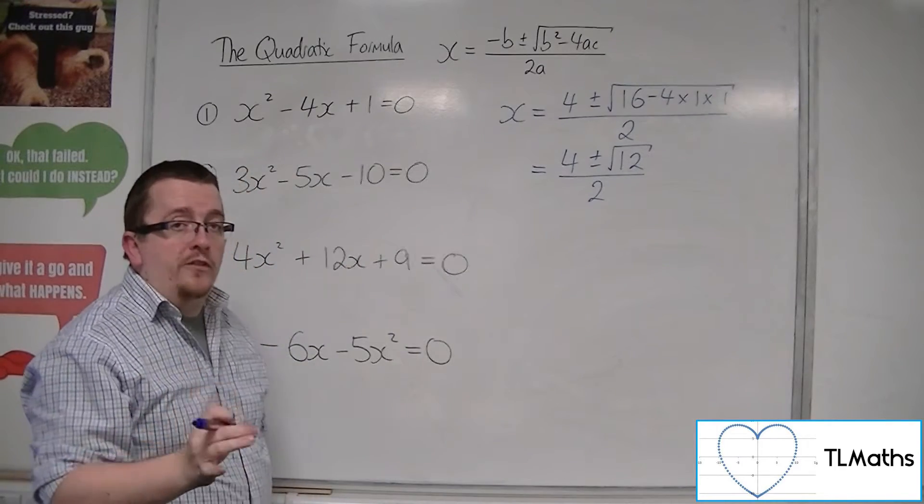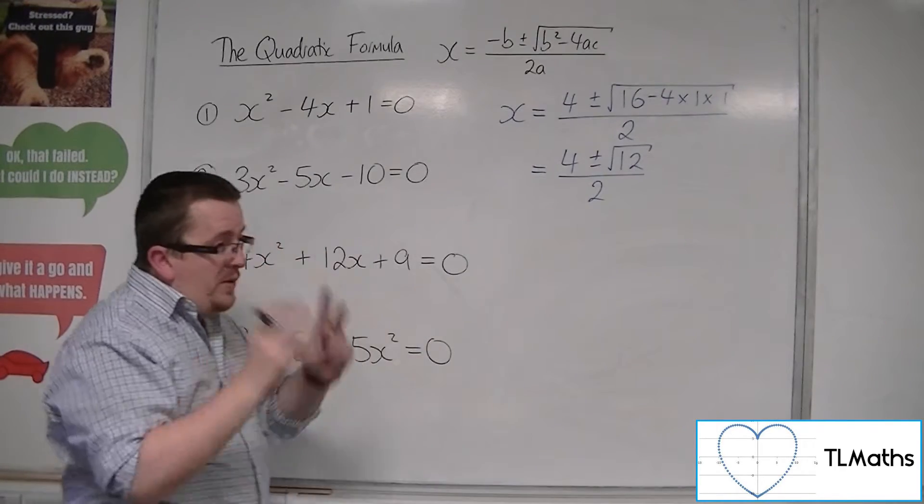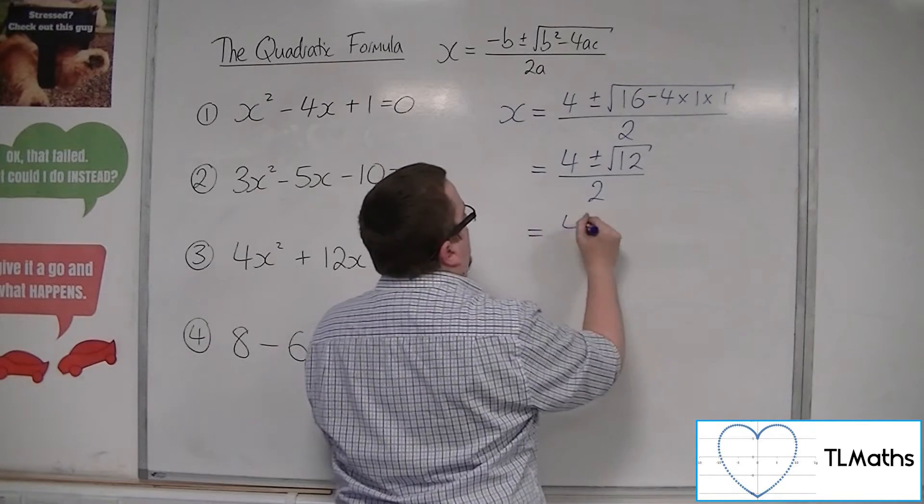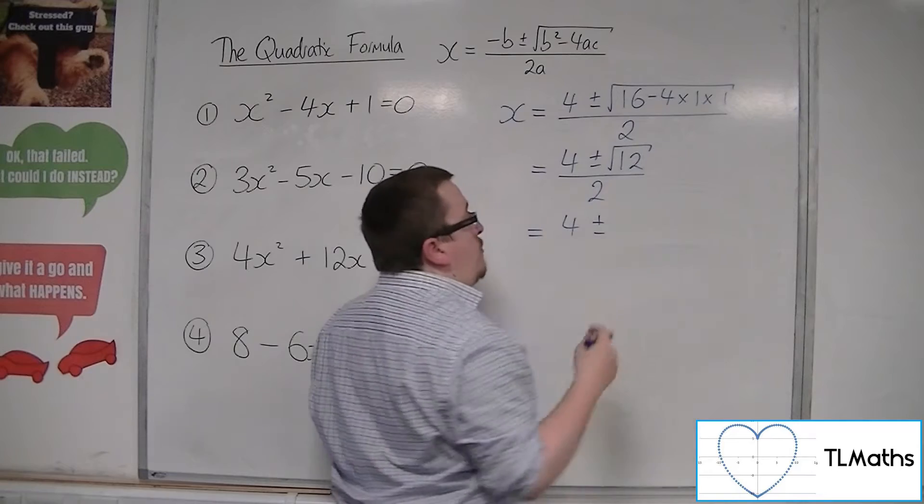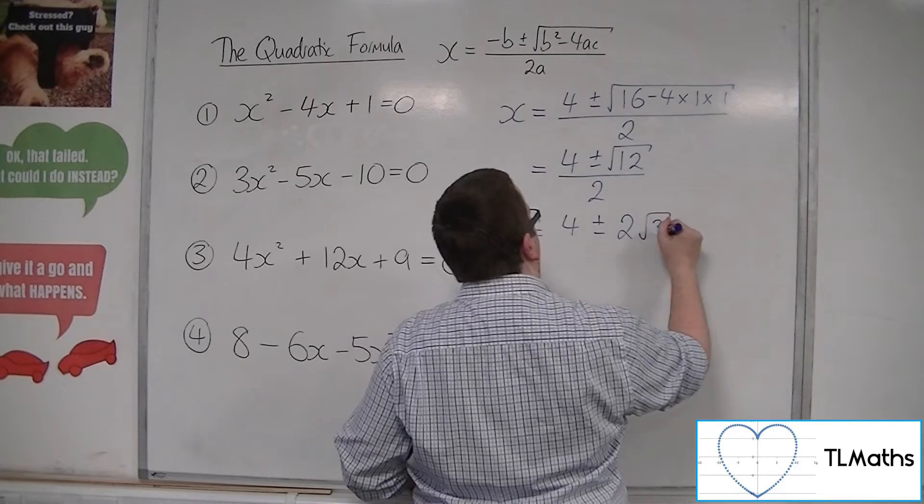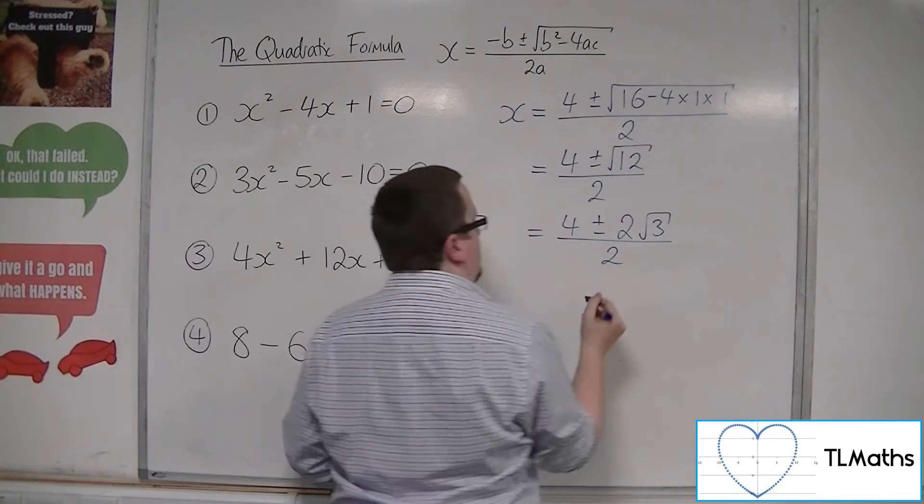Now that root 12 can be simplified. If we can simplify a surd down, we really need to do that. So this is the square root of 4 times 3, so that's 2 root 3 all over 2.